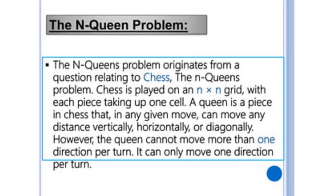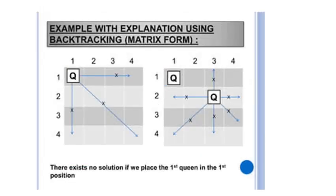The N-queen problem originates from a question related to chess. Chess is played on an N-by-N grid with each piece taking up one cell. A queen is a piece in chess that can move any distance vertically, horizontally, and diagonally. However, the queen can only move in one direction per turn. I will explain this with an example using backtracking in matrix form.